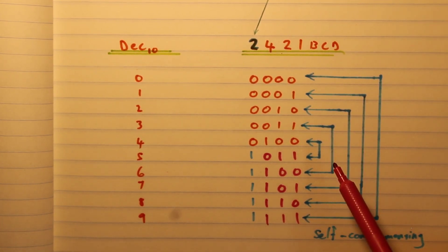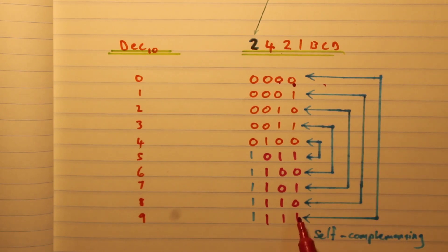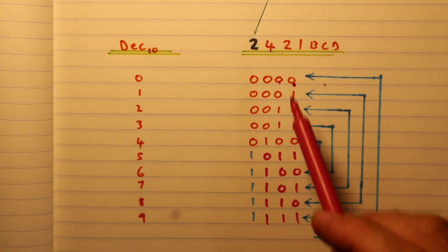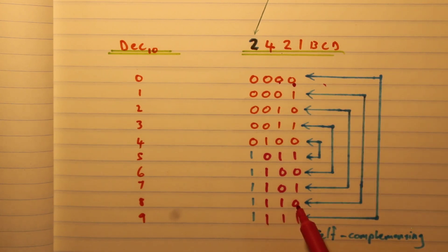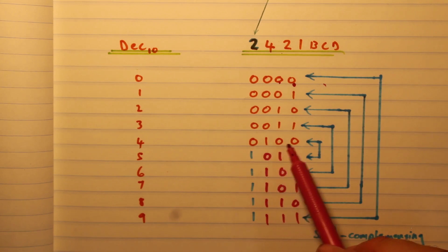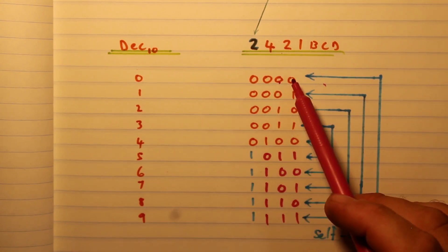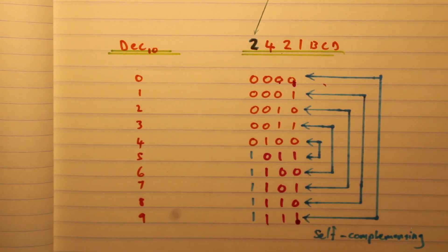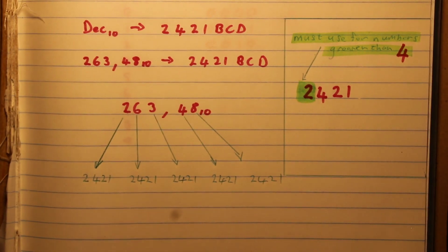There's something very interesting about this code — it's what we call a self-complementing code. You can see from these arrows: for zero the code is 0000, and at the bottom for nine it's 1111. For one it's 0001, and the complement is 1110. It's like a mirror all the way to the middle — four is 0100 and five is 1011. This means after converting you can check your work: if a code and its complement pair don't match, you know something is wrong.